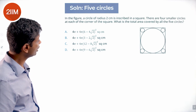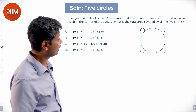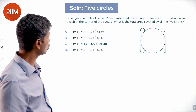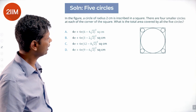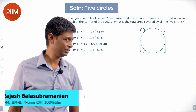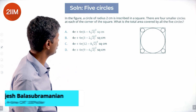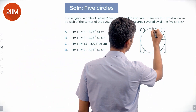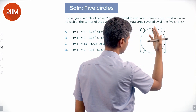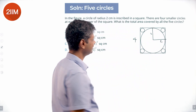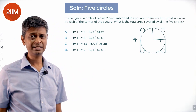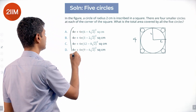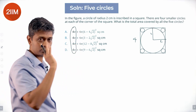In the figure, a circle of radius 2 centimeters is inscribed in a square. There are four smaller circles at each of the four corners of the square. What is the total area covered by all five circles? The big circle has area π r² which is 4π — this part is already accounted for.